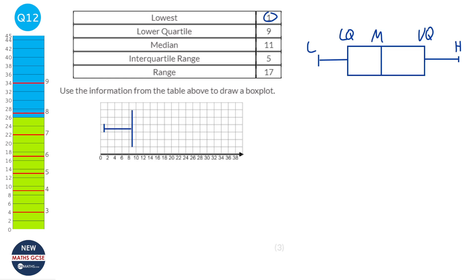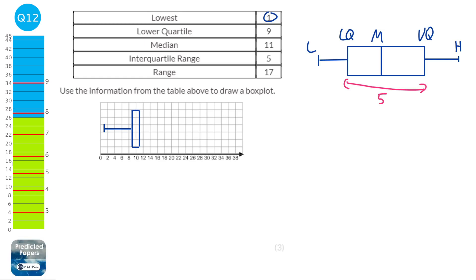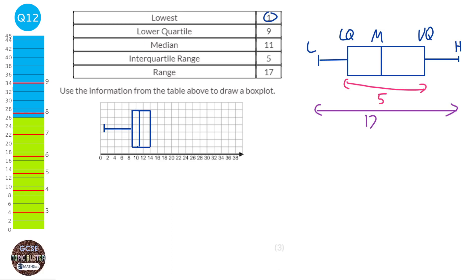The interquartile range is 5, which is the distance between the lower and upper quartile. So the upper quartile is 5 more than the lower quartile: 9 plus 5 equals 14. We put a line at 14 and complete the box. The range is the total width of the box plot, which is 17. The lowest value is 1, so 1 plus 17 equals 18. So the highest value is at 18, and we put a line there to complete the box plot.